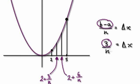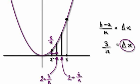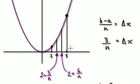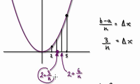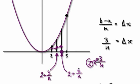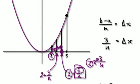So when you get b minus a, that's 3, and then we cut into n strips, so delta x here is 3 over n. If 2 is our starting point, then the x-coordinate at the first strip boundary will be 2 plus 3 over n. The next x-coordinate would be 2 plus 6 over n, because you've got two gaps of delta x, so you multiply by 2.